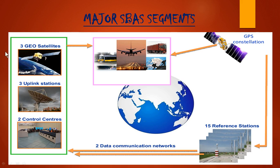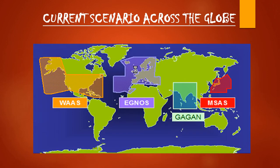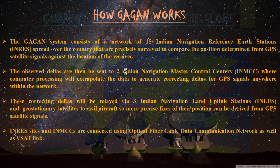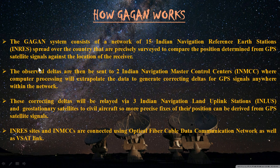SBAS messages are broadcast via geostationary satellites able to cover vast areas. The major SBAS segments include three geostationary satellites, three uplink stations, two control centers, and serve the aviation industry as well as other industries. The information flow goes from the GPS constellation through the 15 reference stations. The current global scenario includes EGNOS, GAGAN, and MSAS covering their respective regions.